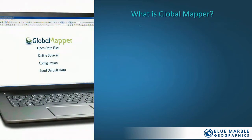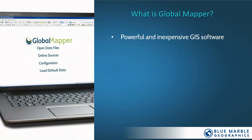So for those of you maybe not familiar with Global Mapper, a quick overview. What exactly is it? Well, it's desktop GIS software — very powerful, very inexpensive. We often hear it described as the Swiss army knife of GIS. A lot of folks have it in their toolkit because it does a lot of things. It does all of your digitizing, drawing, thematic mapping, map publishing, etc. But its strength really is in the 3D space, as you'll see in 3D analysis and surface generation.